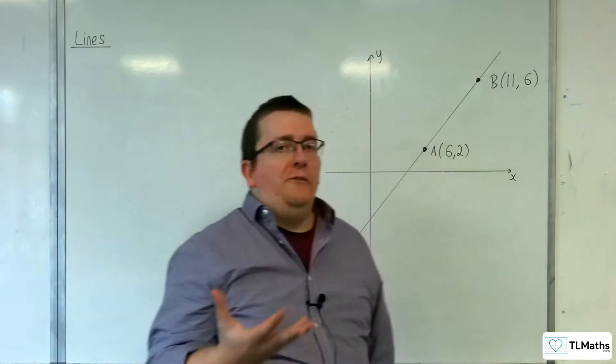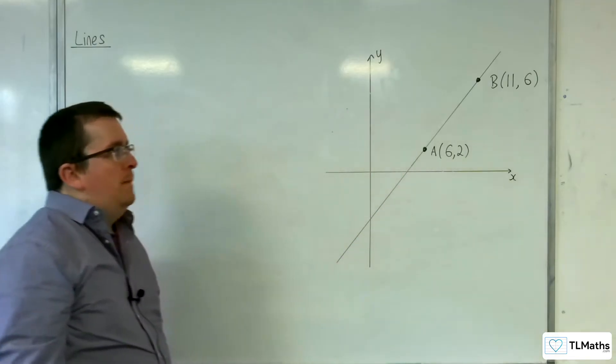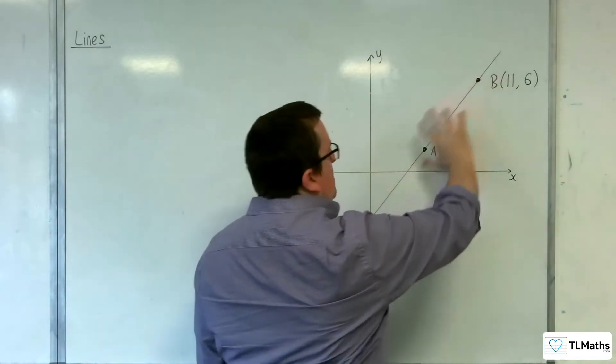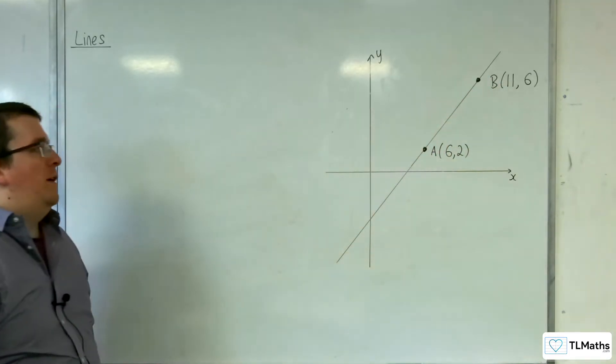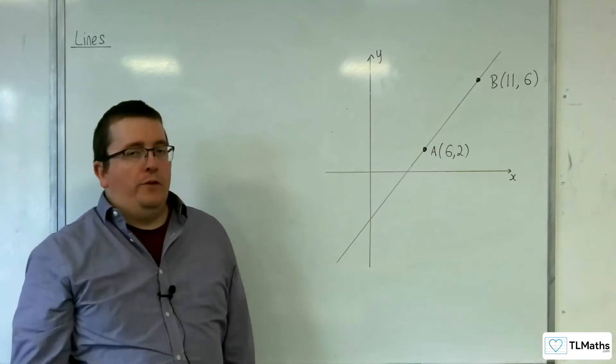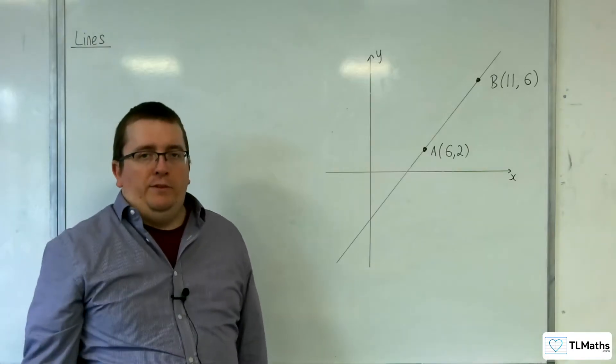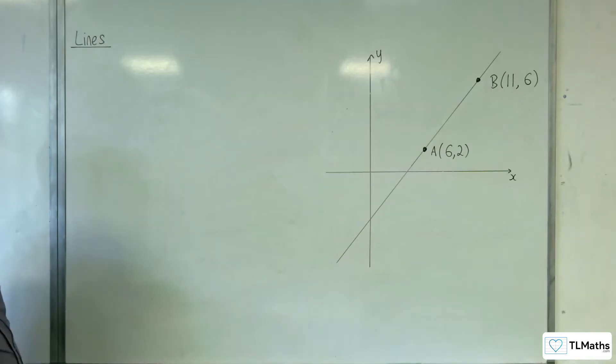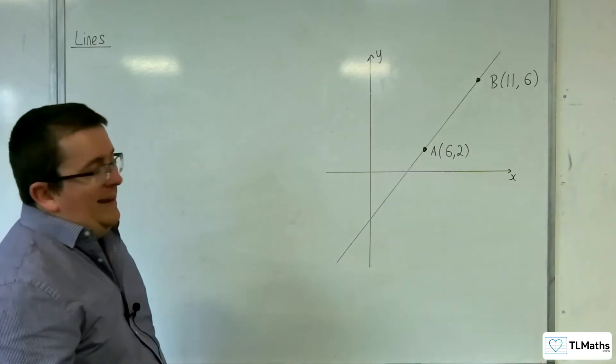In this video, I'm going to introduce you to the vector equation of a line. Now, if I just had two coordinates A and B in 2D, and I said find the equation of the line going through those two points, you'd be able to do that. You learn about it in A-level maths and GCSE maths, so you would be able to do that fairly easily.